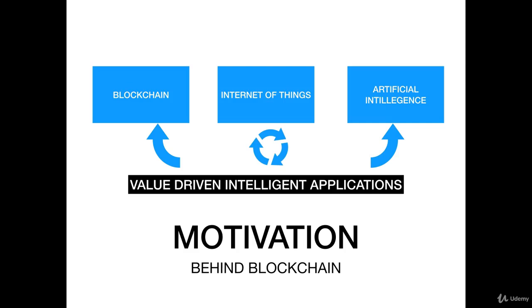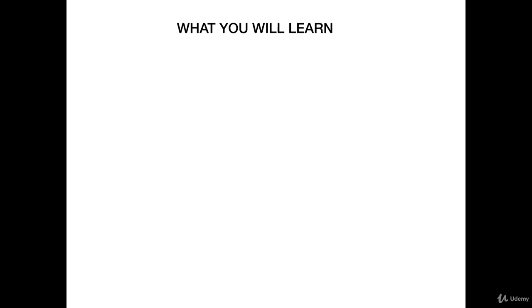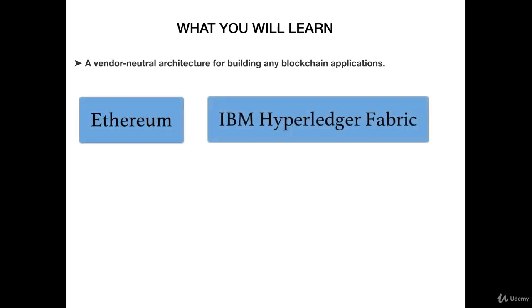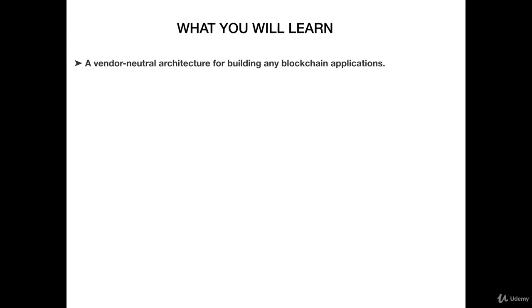While we described our vision, we are probably at the first generation of blockchain implementation, where technologies are still evolving and use cases are being realized. In this course, we will depict the vendor-neutral architecture that will enable us to develop blockchain-based applications. We will then look at two major implementations: Ethereum and IBM Hyperledger Fabric.